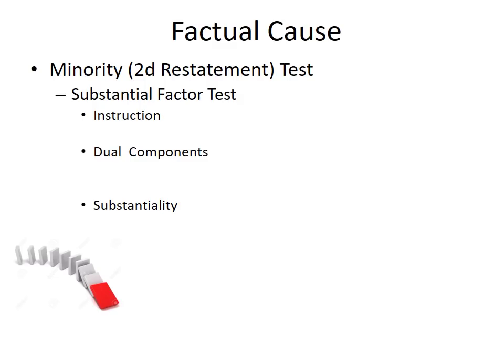In jurisdictions that have adopted the but-for test, they will replace that test with the substantial factor test in cases involving independent sufficient causes. But some jurisdictions have decided that if the but-for test doesn't work in all situations, it may simply be better to use the substantial factor test for all negligence analyses. This is the minority approach adopted by the second restatement and that California still applies. The instruction to the jury is simply to ask whether the defendant's negligence was a substantial factor in producing the plaintiff's harm.